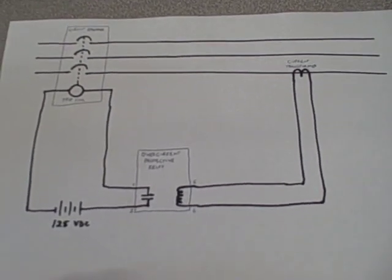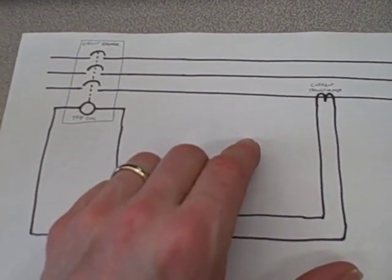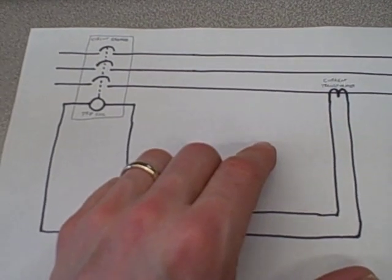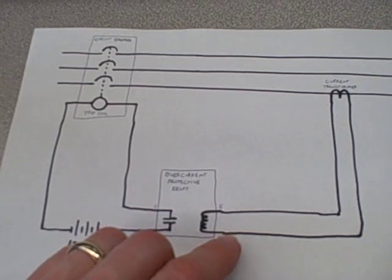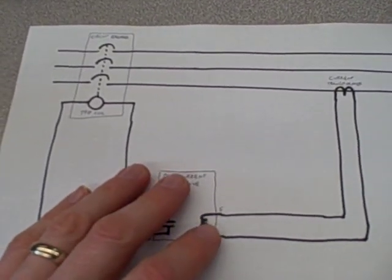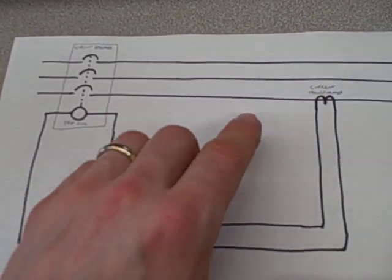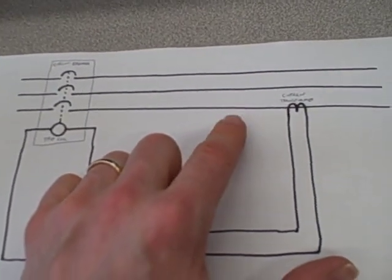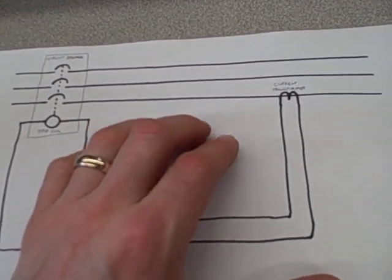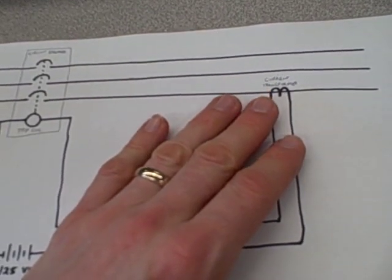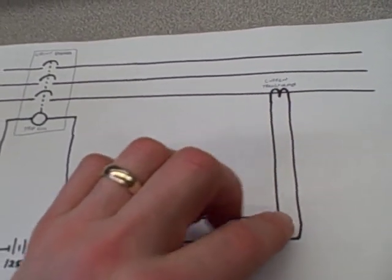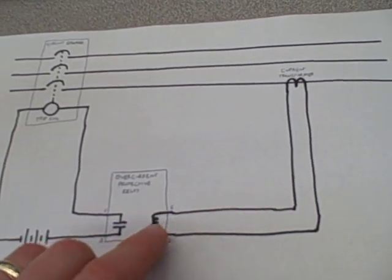When we're dealing with high power electrical systems and we need to measure quantities such as voltage and current, it would be impractical and unsafe to have our panel mounted instruments or protective relays directly connect to the high voltage, high current power lines. We need ways to measure what's going on in the power system and to step those signals down to a level that would be safe and reasonable for a panel mounted instrument to monitor.